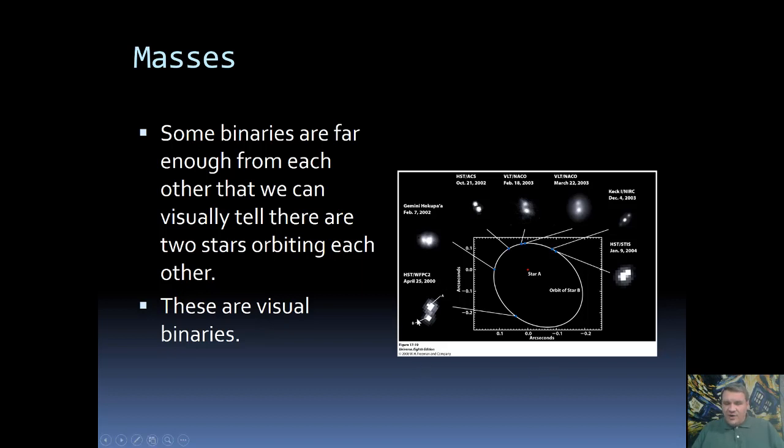For example, we have this pair where you can easily see that there are two stars and they're slowly orbiting around each other. In this case, we can easily see both stars. When this happens, where you can see both stars and see that they're orbiting around each other, these are known as visual binaries, because we actually see both stars.